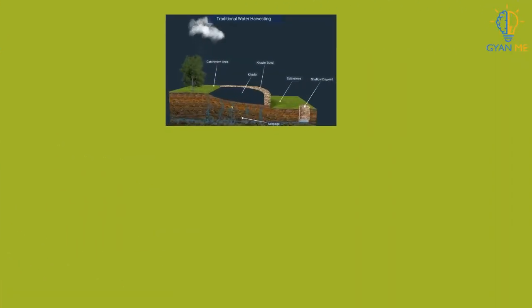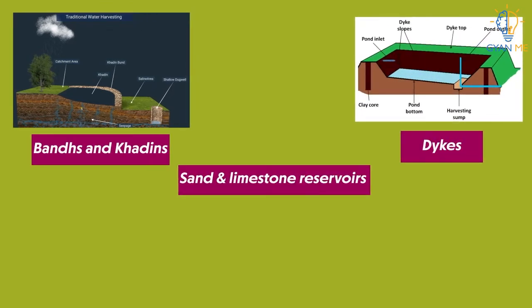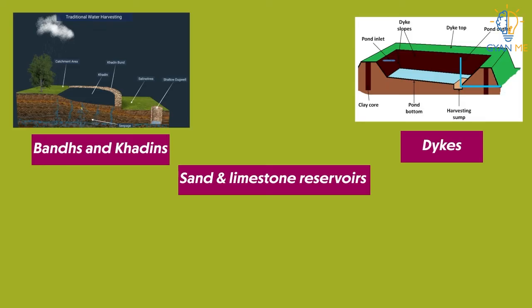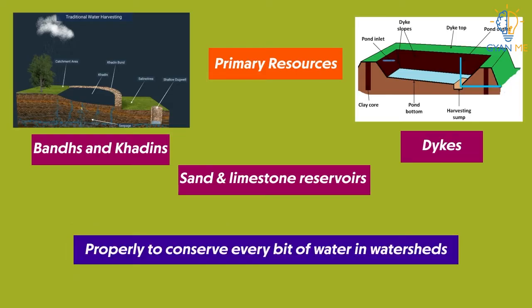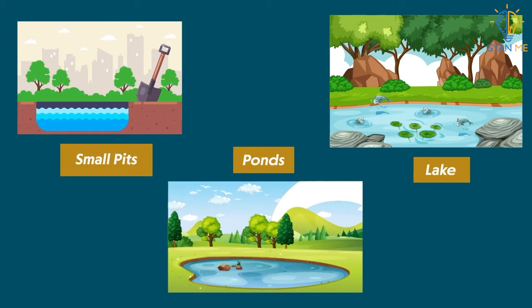They built small earthen dams called Buns and Khadins, and constructed dikes, sand and limestone reservoirs in their area. By managing these current resources — that is, primary sources — properly, they conserve every bit of water in the watershed. We can also dig small pits, lakes or ponds in order to capture rainwater and store it, creating new or secondary sources in order to manage watershed areas.